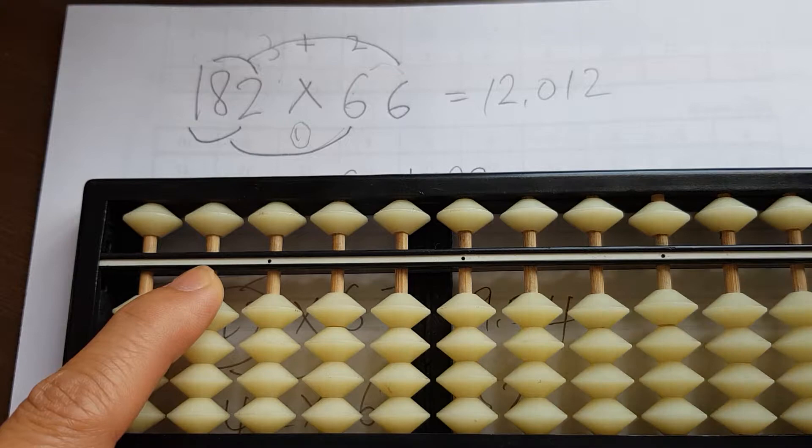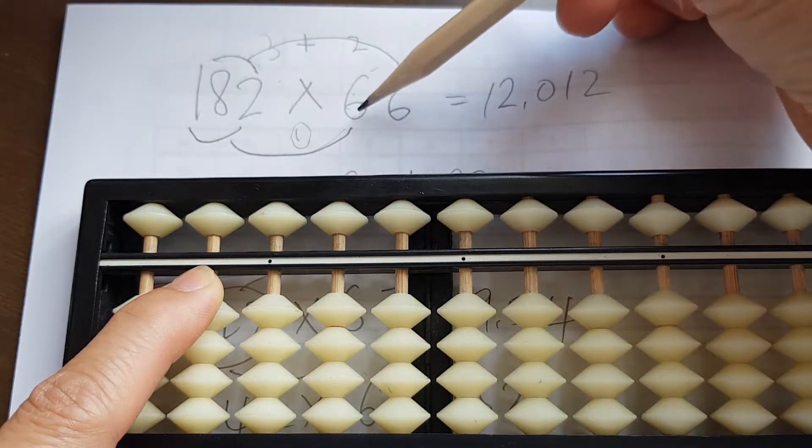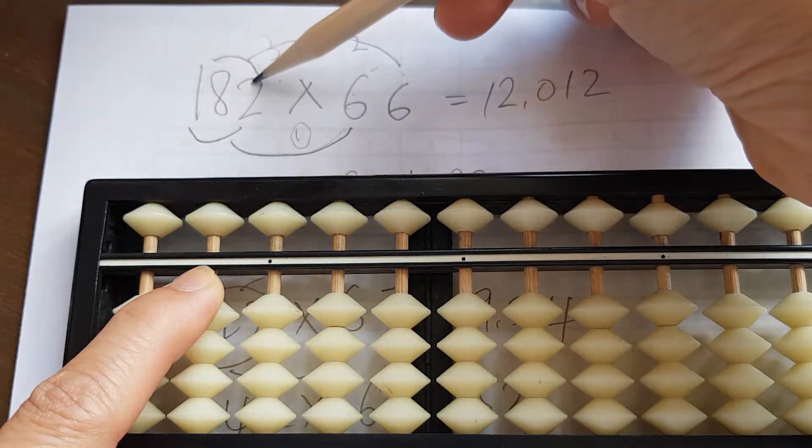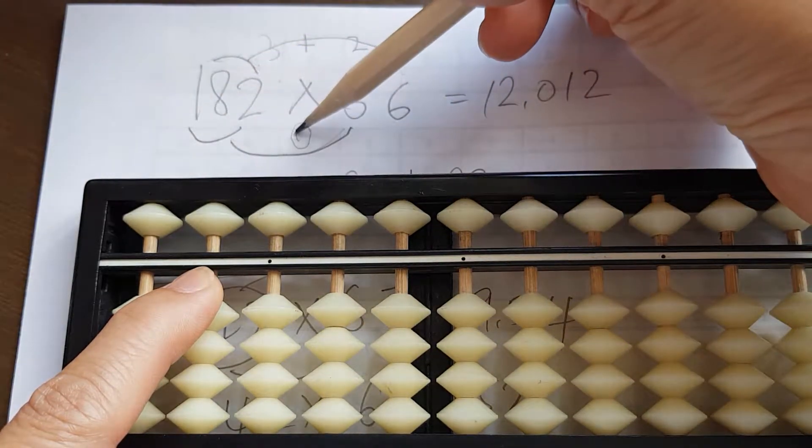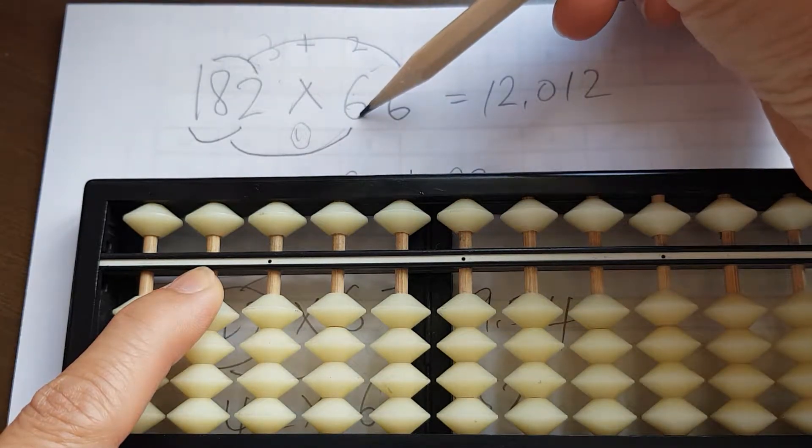The next thing we need to do is two sets of multiplication. We need to do 182 times the six, which is actually 60, and then we do another 182 times the six units.